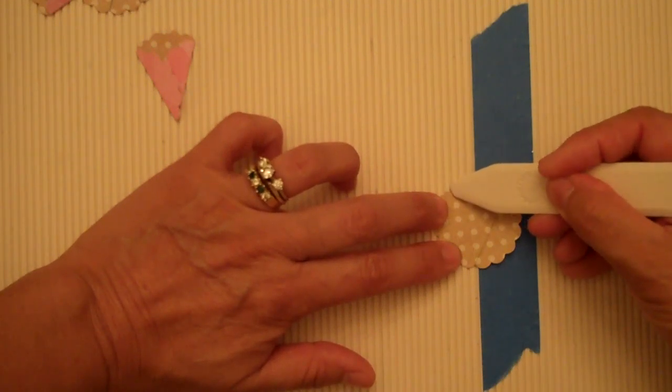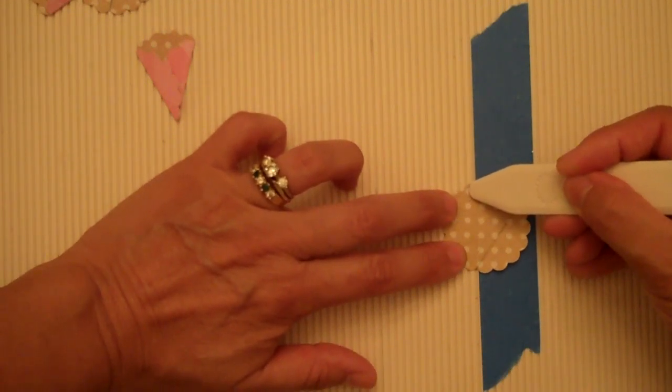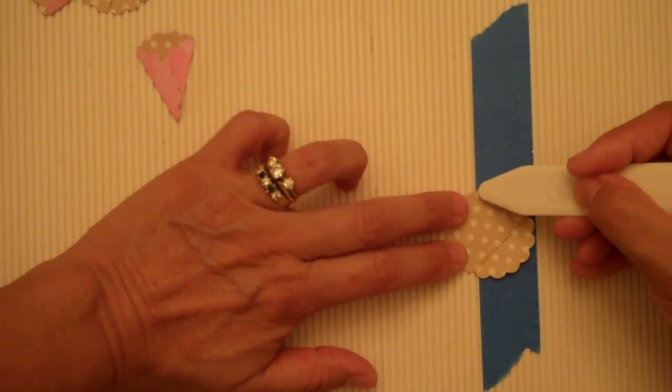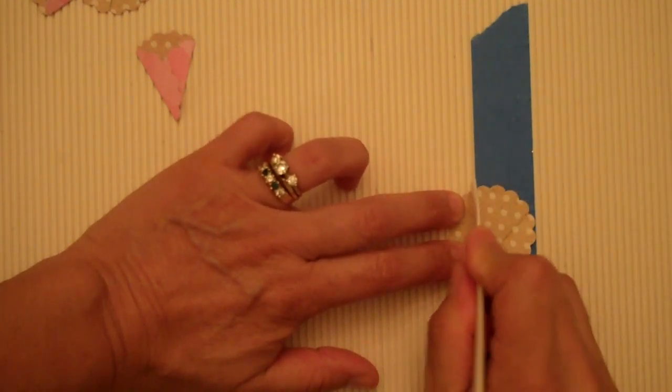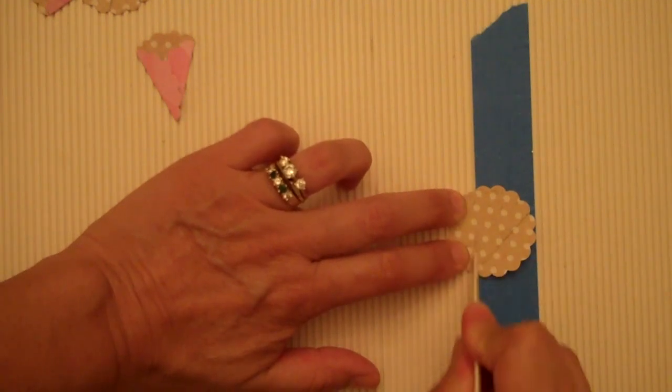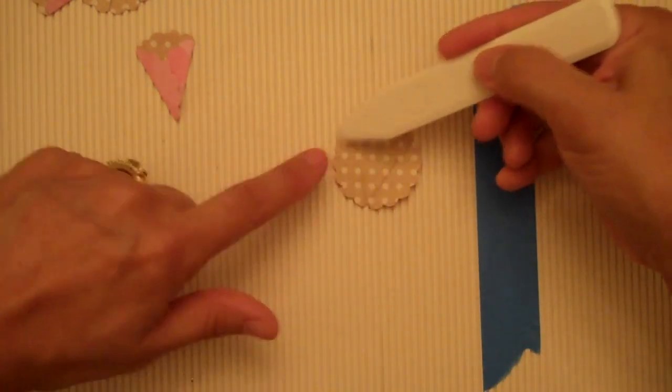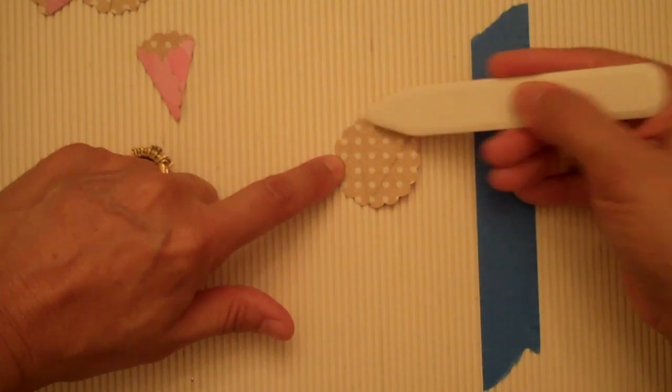Have the bottom edge on your score line and then just count four across. One, two, three, four. So at the edge of the fourth one is where your score line will run across. There's actually six scallops on this side, six scallops on this side, and four at the top.